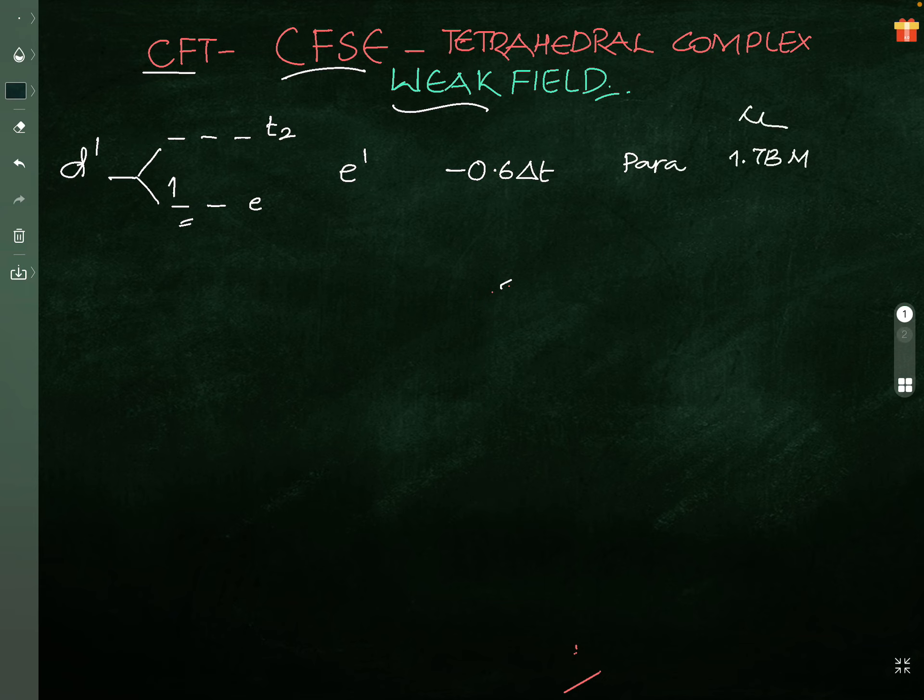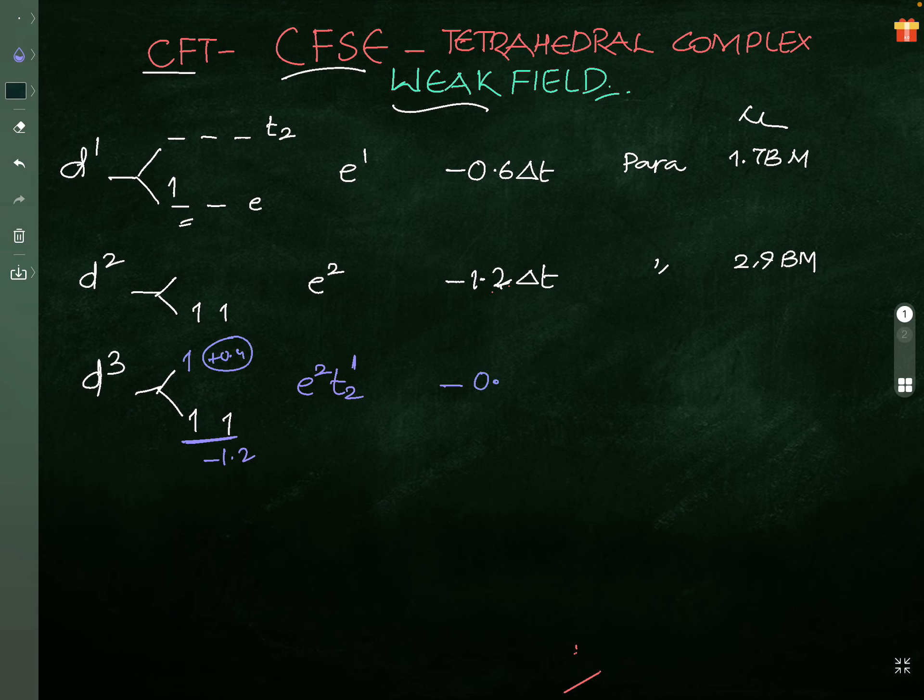d2 configuration, very simple: e2, minus 1.2 delta t, paramagnetic 2.9 Bohr magnetons. d3 configuration: one, two, the third electron will enter here. So this is e2 t2^1, minus 1.2 because of these two and minus 0.4 because of this, so it's going to be minus 0.8 delta t, paramagnetic 3.9 Bohr magnetons.